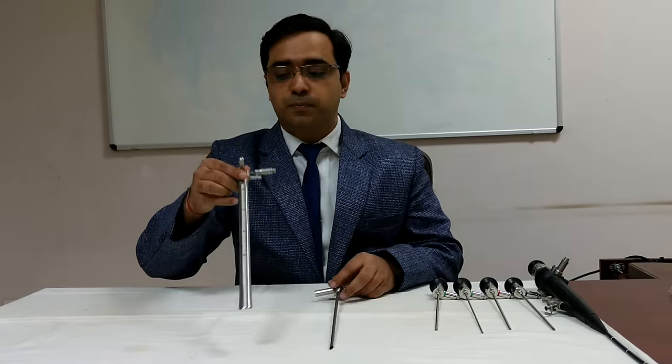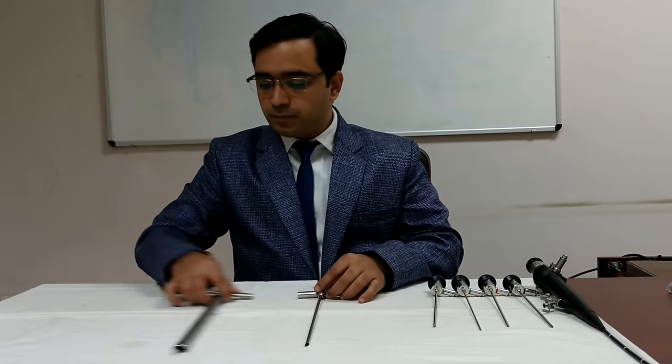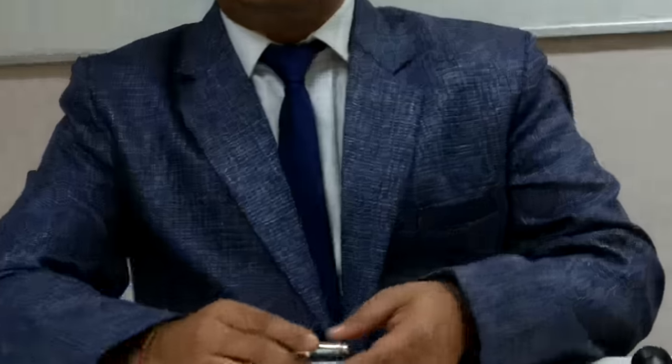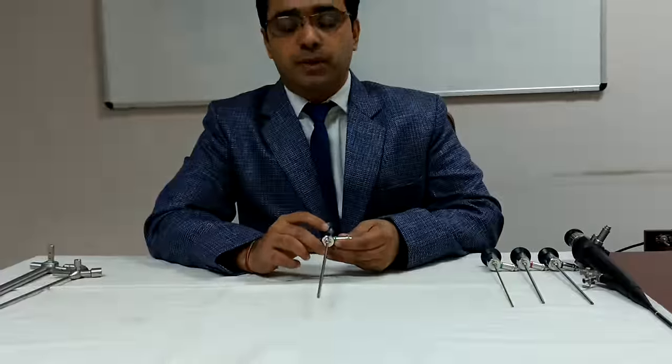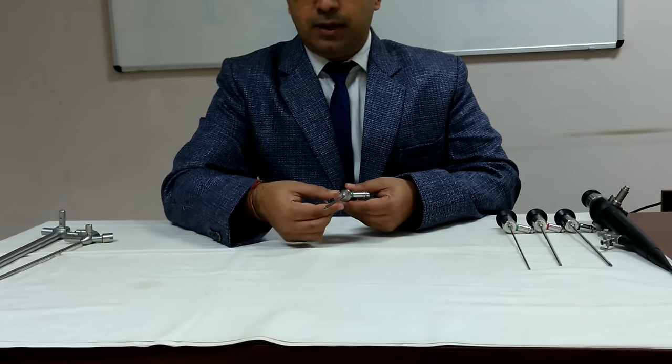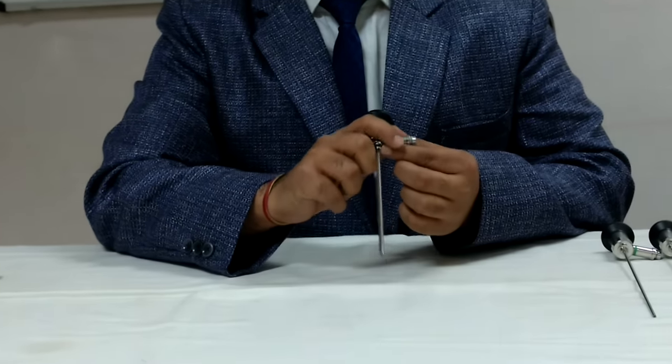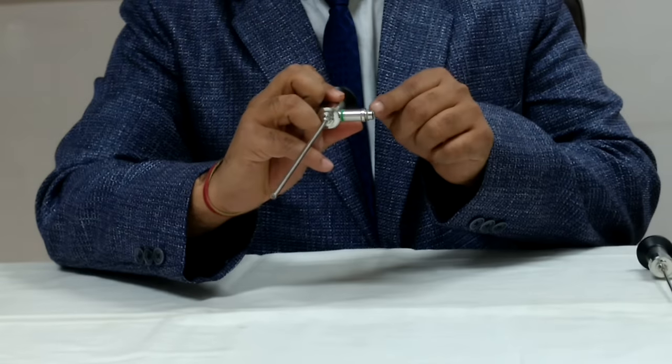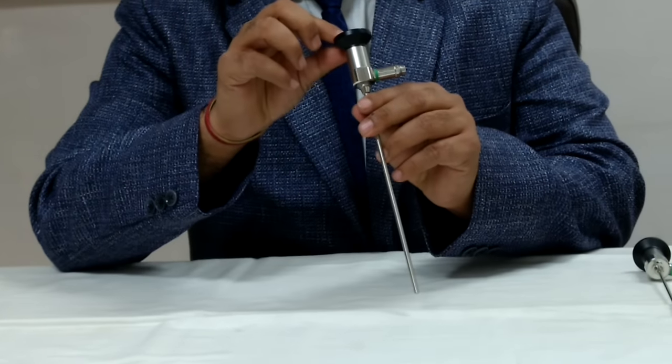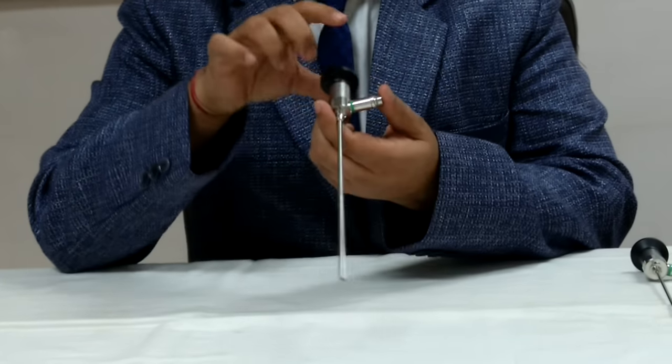So this is esophagoscope, bronchoscope. Another important scope I should tell you is nasal endoscope. This is adult nasal endoscope. This is the part which goes into the nose. This is what we hold in our hand. This is for light carrier. This is eyepiece from where we look or from where we attach camera.